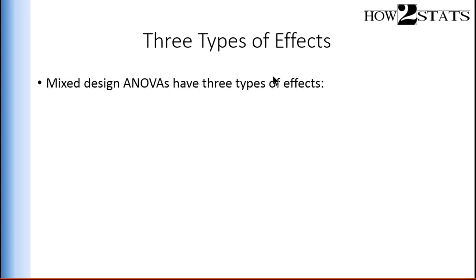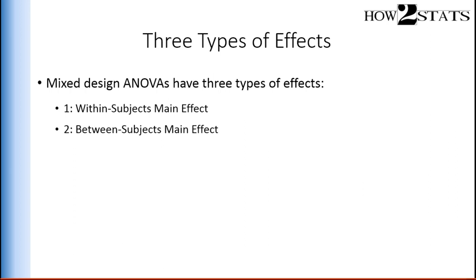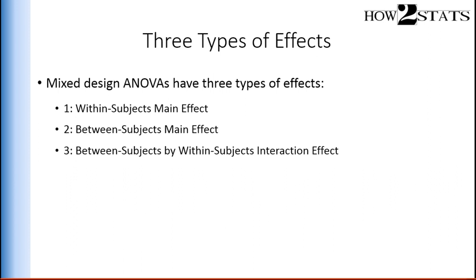In this video, I'm going to talk about the types of effects that may be observed in a mixed design ANOVA. There are three types of effects: a within-subjects main effect, a between-subjects main effect (also known as a between-groups main effect), and a between-subjects by within-subjects interaction effect. For most people conducting a mixed design ANOVA, they are principally interested, if not exclusively interested, in the between-subjects by within-subjects interaction.